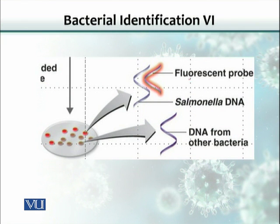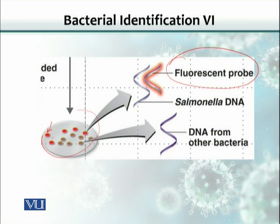Because this probe has been radio-labeled with a radioisotope, or it could carry a fluorescent dye, we can detect the color in these colonies. As you can see, there are five colonies that are positive with respect to Salmonella DNA. So this is another way of identification of an unknown bacterium in a sample.